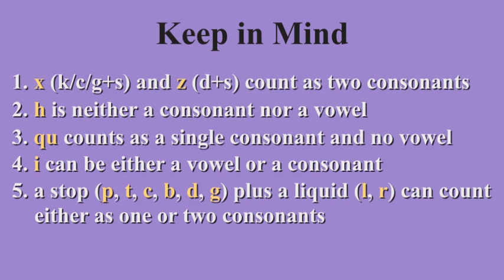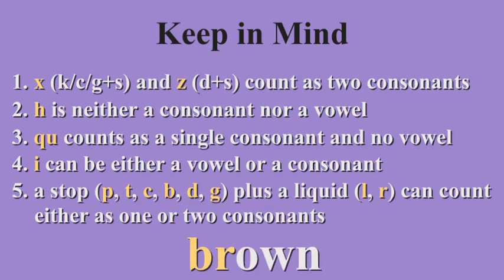Here's the toughest rule. A stop — where you stop the air to form a sound: P, T, C, B, D, and G — followed by a liquid, which is a consonant formed with your tongue, so an L or an R, can count as either one or two consonants. So it doesn't necessarily make the vowel before it long. In English terms, a stop plus a liquid, like the BR in 'brown,' is kind of just one consonantal sound. The more practice you have with these rules, the easier they'll get to remember until eventually you won't even think of them.